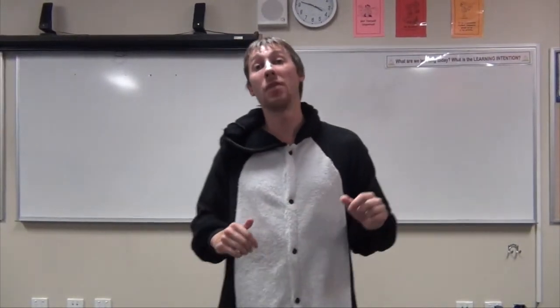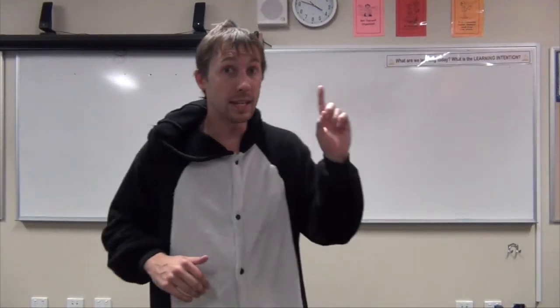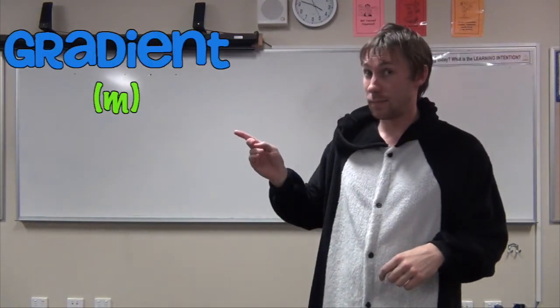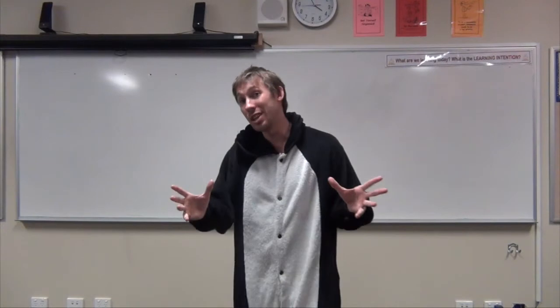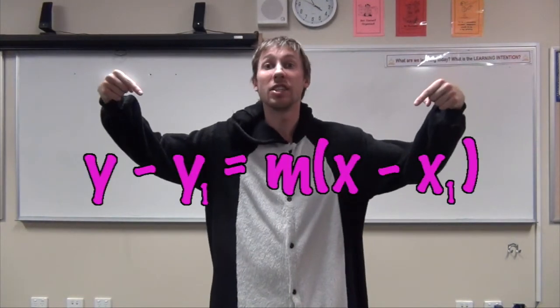Now, to be able to find the equation of a straight line you must eventually have these two things: at least one point and the gradient. And then what you're going to do is substitute them into this formula. Y - Y1 = M(X - X1).